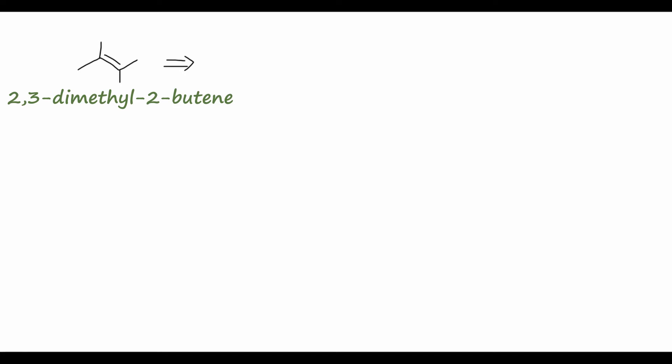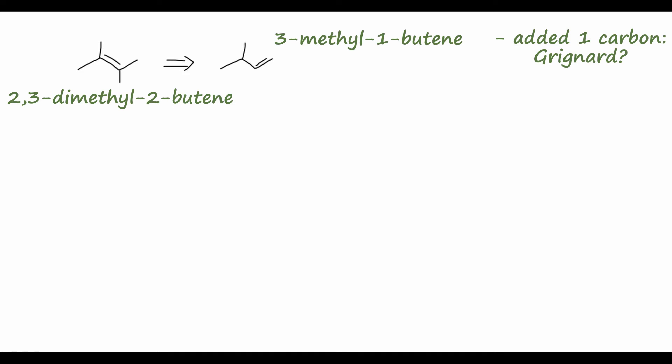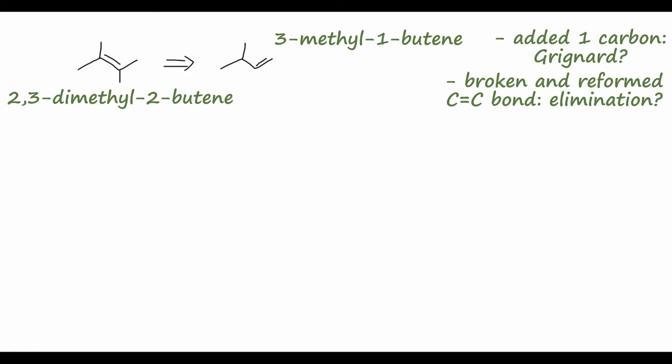Let's move on to the medium difficulty retrosynthesis: the production of this tetrasubstituted alkene, 2,3-dimethyl-2-butene, from 3-methyl-1-butene. We notice that we've added one carbon — we start with a 5-carbon molecule and end up with 6 carbons — which means we'll probably have to utilize a Grignard reagent, our very useful reaction for forming carbon-carbon bonds. We can also notice that we've broken the double bond in the starting material but reformed another in the product, so an elimination reaction — E2 or E1 — is probably involved.